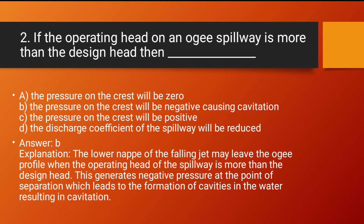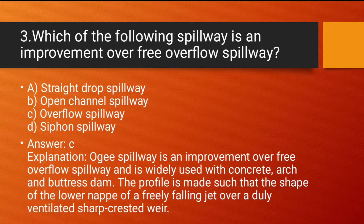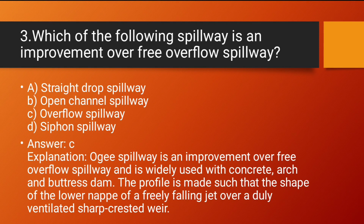The pressure on the crest will be negative, causing cavitation. Question number 3: Which of the following spillways is an improvement over the free overfall spillway? Answer: Option C — Overflow spillway (Ogee spillway). Explanation: The Ogee spillway is an improvement over the free overfall spillway and is widely used with concrete, arch, and buttress dams. The profile is shaped to match the lower nappe of a freely falling jet over a duly ventilated sharp-crested weir.